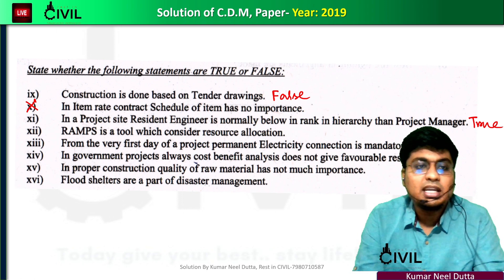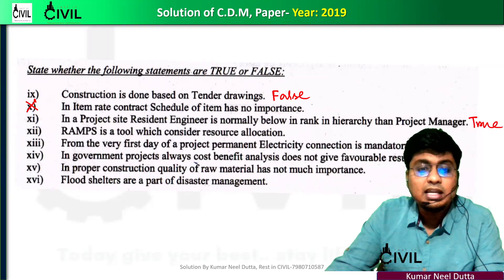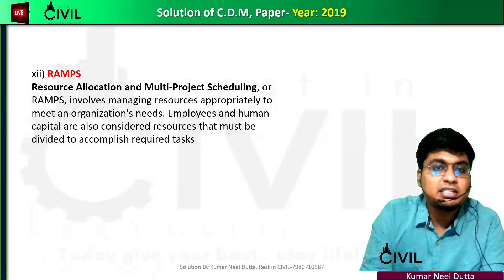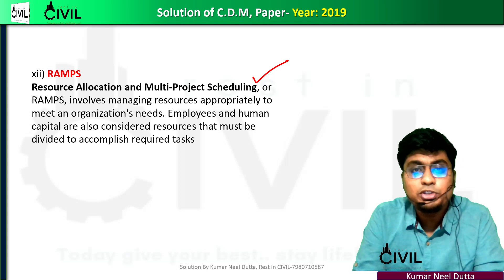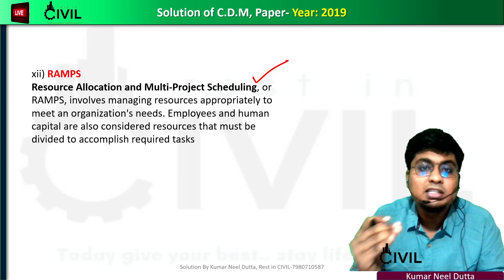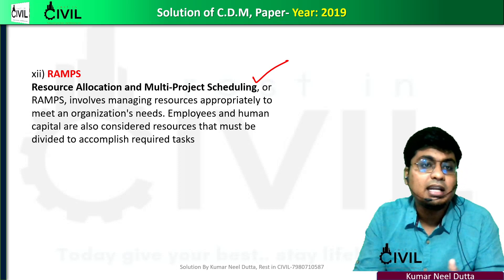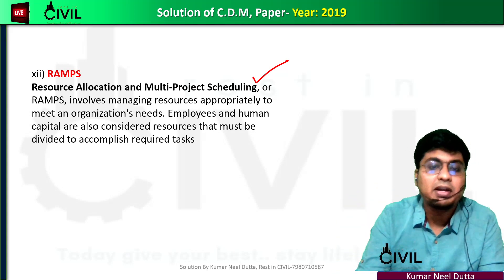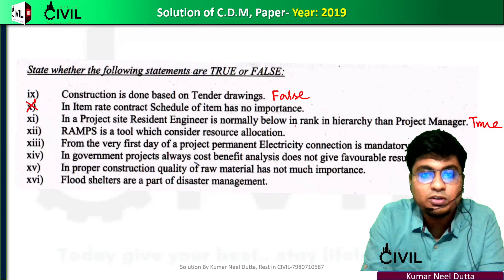Next question involves a tool that considers resource allocation. The answer is RAM — Resource Allocation and Multiple project scheduling. RAM is used to schedule projects considering all types of resources including human resources and material resources. So using RAM for resource allocation is absolutely correct — this statement is true.